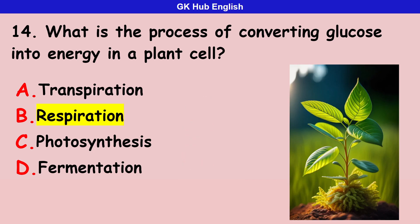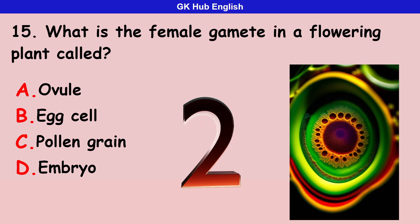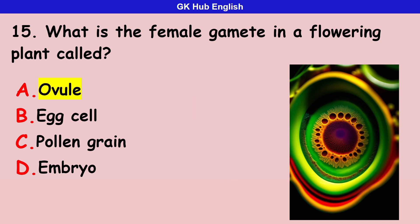Correct answer is respiration. Fifteenth question: what is the female gamete in a flowering plant called? Option A is ovule. Option B is egg cell. Option C is pollen grain. Option D is embryo. Correct answer is ovule.